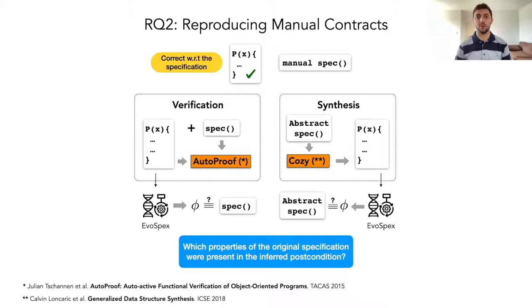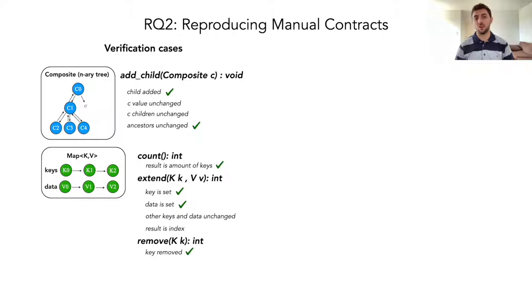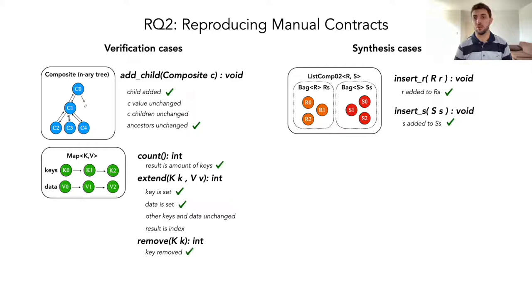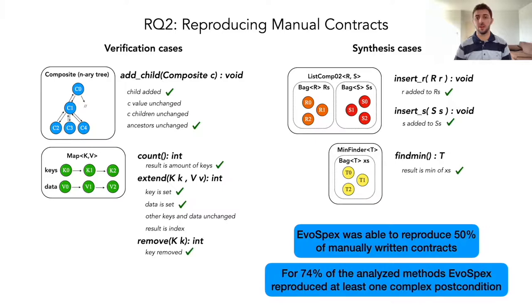And in these cases, our algorithm was able to reproduce a set of rich contracts, for example, the correct addition of elements into an AVL tree, also the correct counting, addition, or removal of keys and data from a map structure. In the synthesis cases, our technique was able to capture contracts such as the correct addition of elements into one bag or another, also to assert that the method properly finds the minimum in a bag. In summary, EvoSpex was able to reproduce 50% of manually written contracts, and for 74% of the analyzed methods, EvoSpex reproduced at least one complex post-condition.